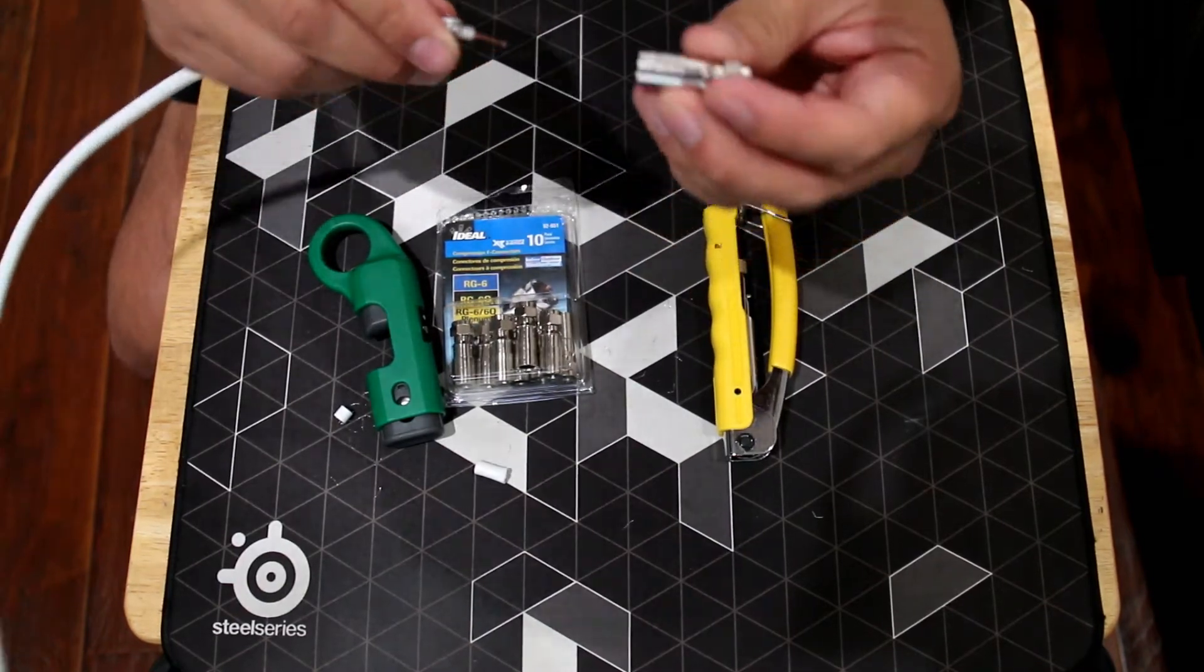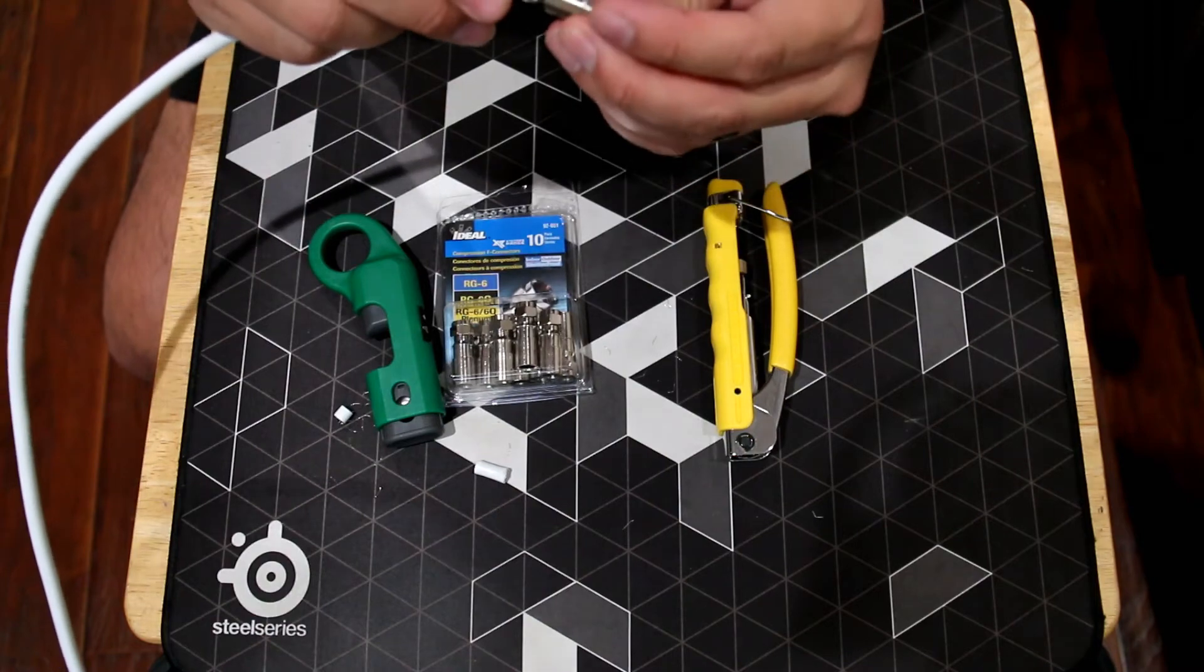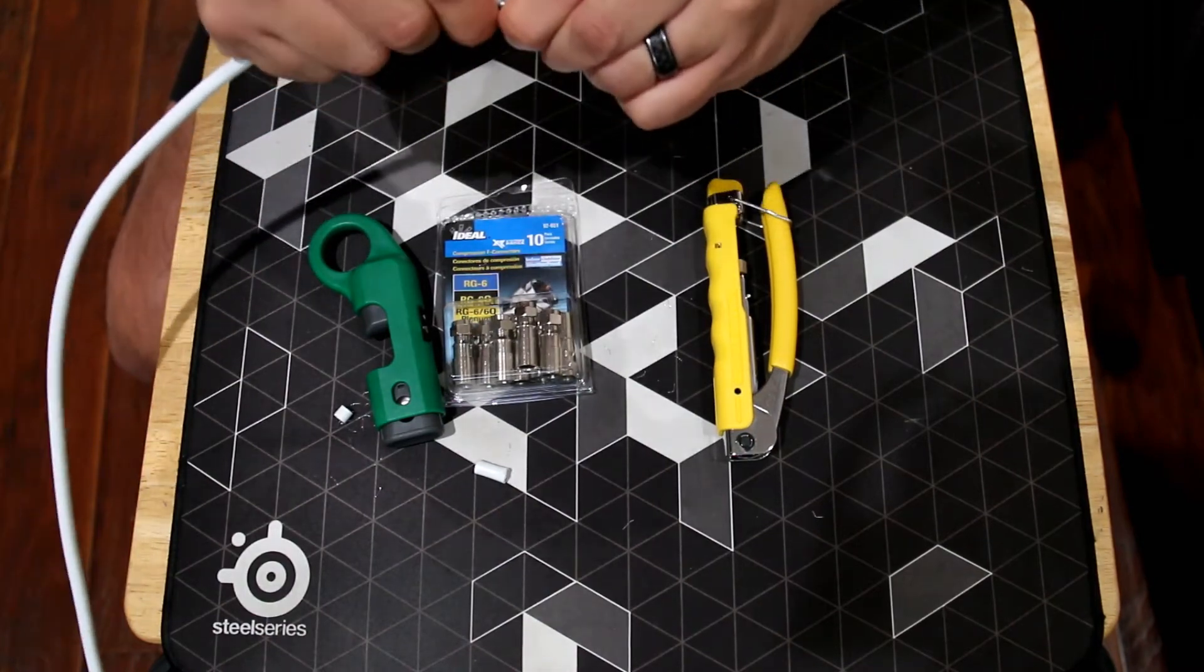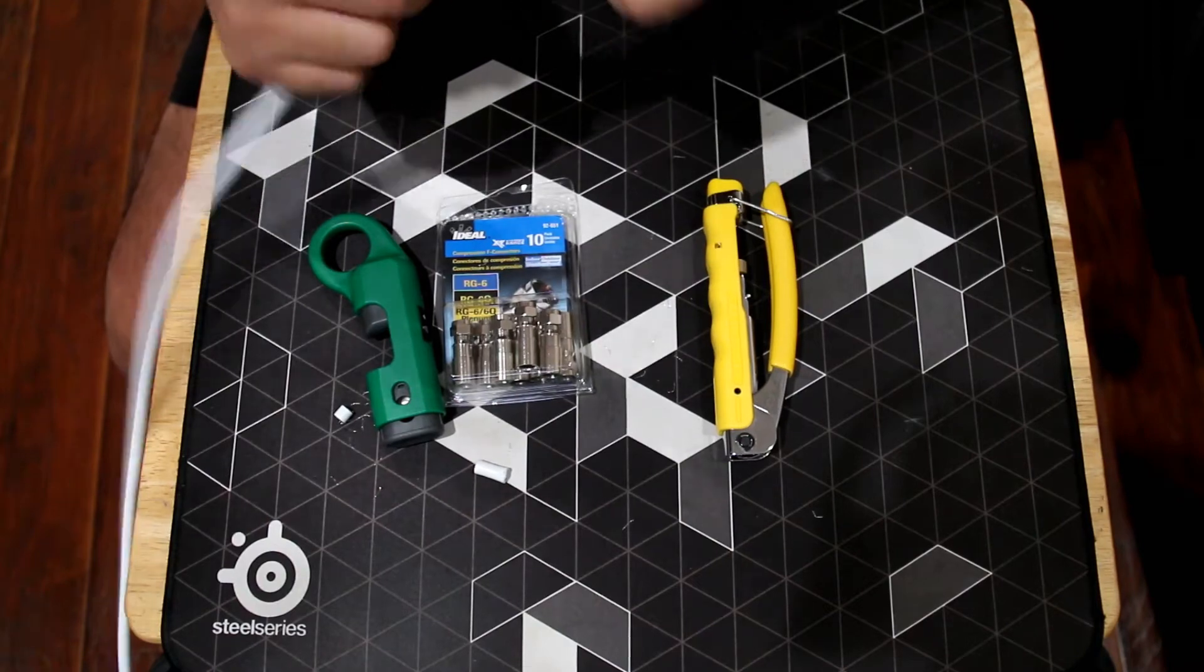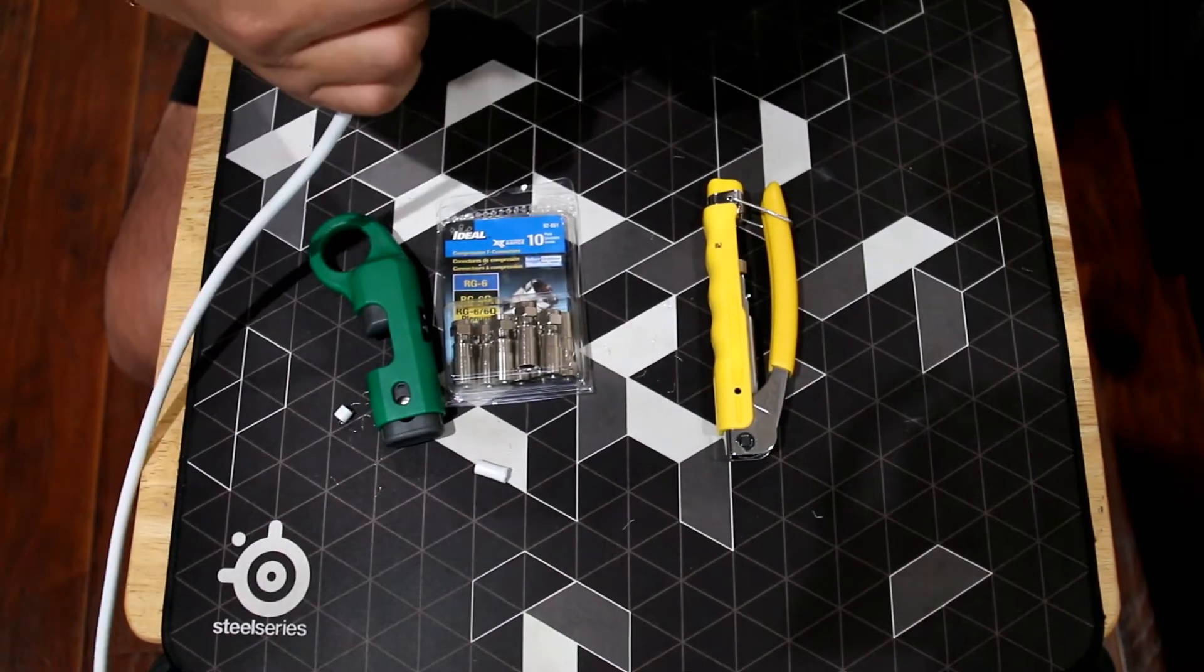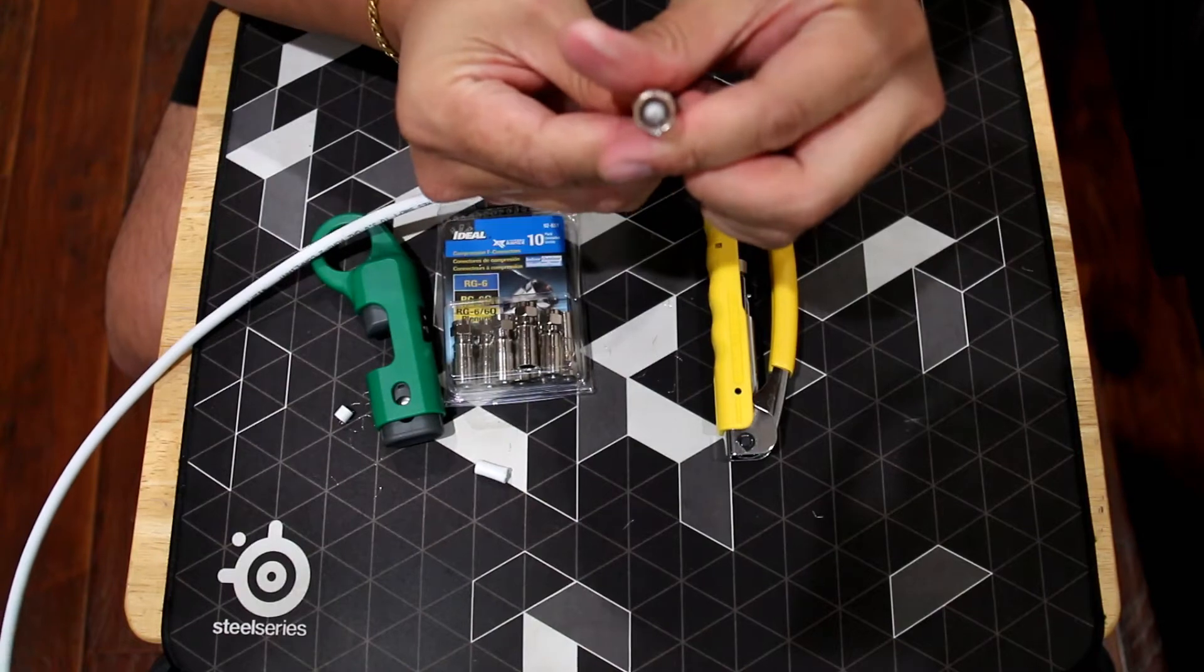When you're done, grab the F connector. You're going to push it in firmly. Some of them may be hard, but just push it in until you see the outer layer insulation into that.